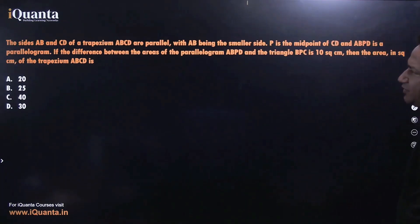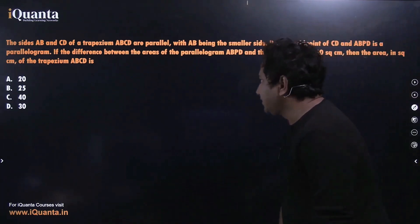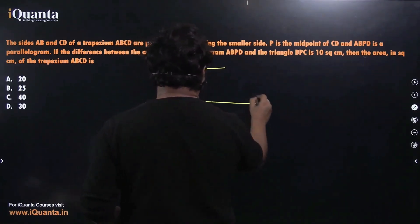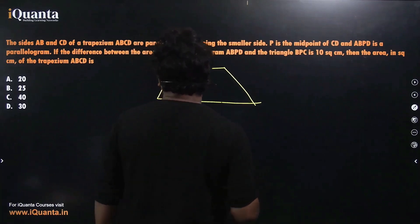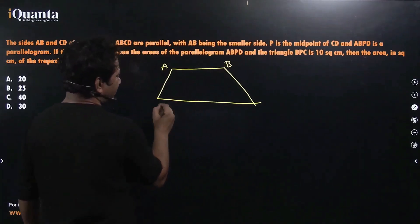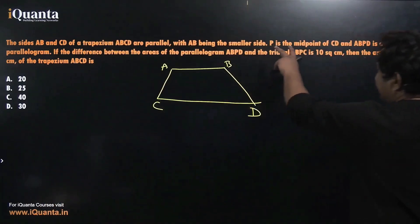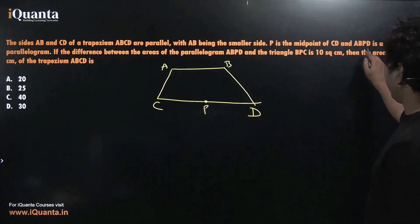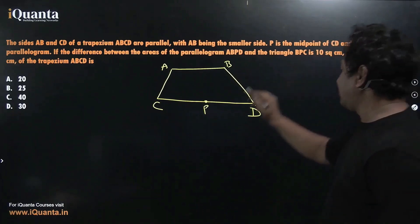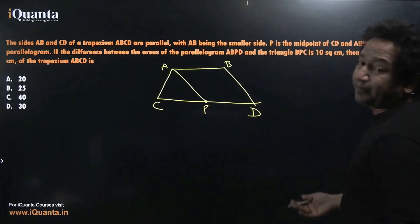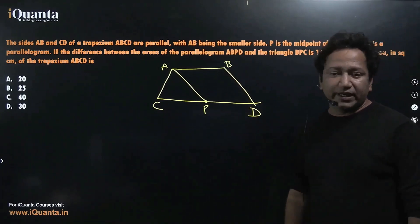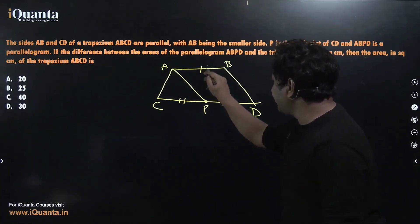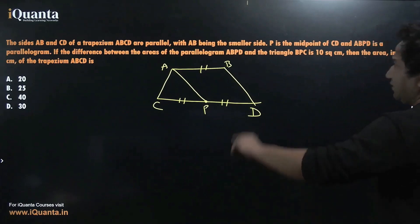The next question says: the sides AB and CD of a trapezium ABCD are parallel, with AB being the smaller side. We should start making the diagram immediately. P is the midpoint of CD. Since ABPD is a parallelogram, AB and PD must be equal. Moreover, CP = PD = AB since P is the midpoint of CD.